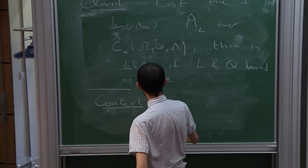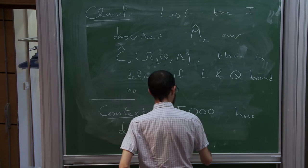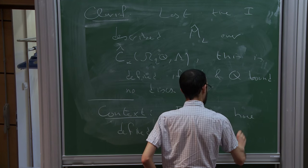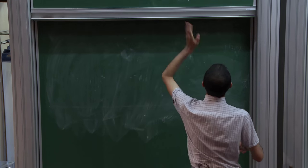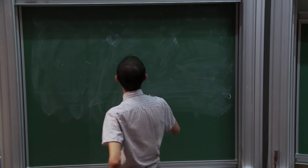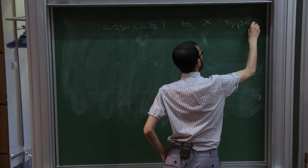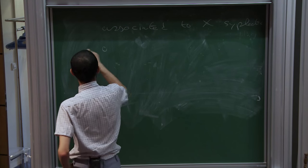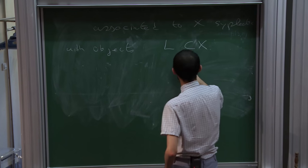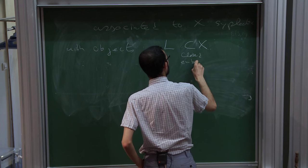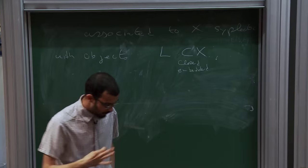So the context is that FO³ have defined a category, which I would call the Fukaya category of X. X is some closed symplectic manifold, or maybe it has contact boundary. It has some properties — if it's open, it has some properties so that holomorphic disks don't escape. And with objects being Lagrangian submanifolds — let's make them closed, let's make them embedded.